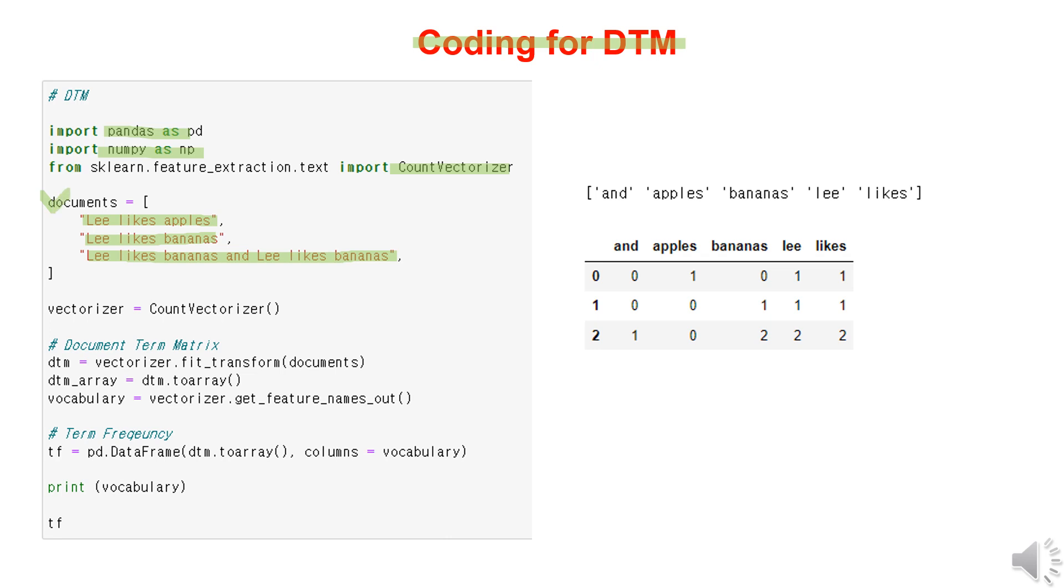After tokenizing the sentences into words and building the vocabulary list by removing duplicates, we'll have a vocabulary list of five words: and, apples, bananas, Lee, and likes.